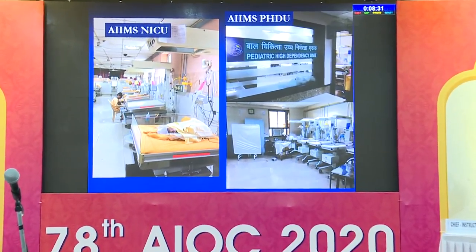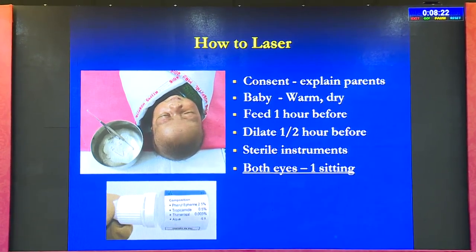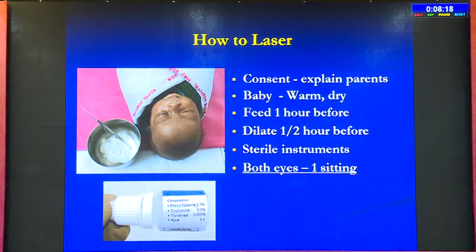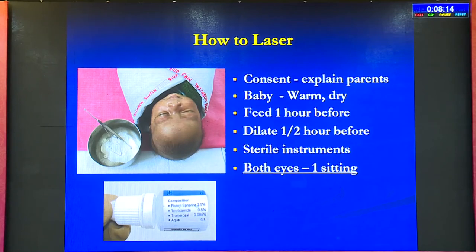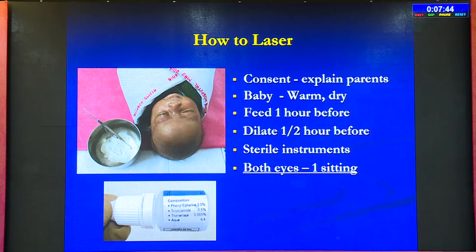Where to perform the laser procedure: we perform at an HDU in the ICU for inborn babies — a 6-bedded pediatric high dependency unit at RP Centre. How to laser: consent is very important — explain to parents what's happening to the baby and the eyes, the need for follow-up and laser, and whether the disease will be controlled. The baby needs to be warm and dry. You can feed the baby one hour before the procedure, dilate half an hour before, and instill drops twice with punctal occlusion. We use 2.5% phenylephrine and tropicamide 0.5% — much less than the commercially available full-strength adult drops. Both eyes are done in one sitting because these babies are often sick and you may not get a second chance.